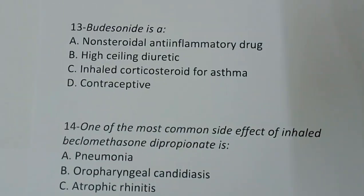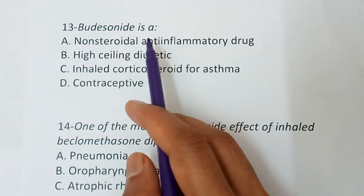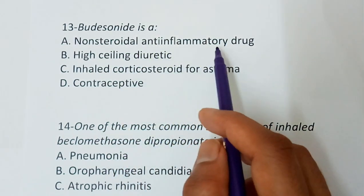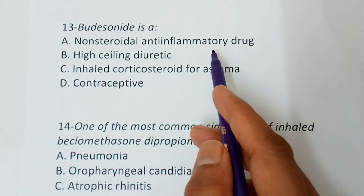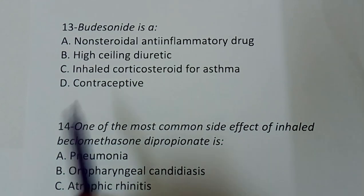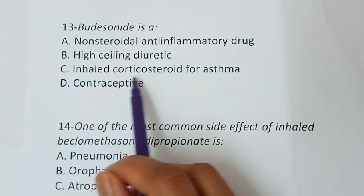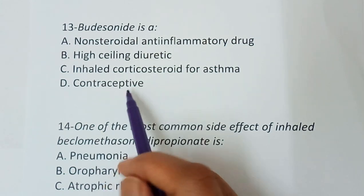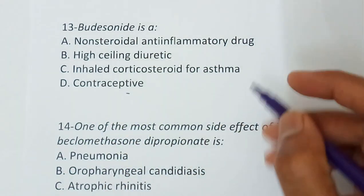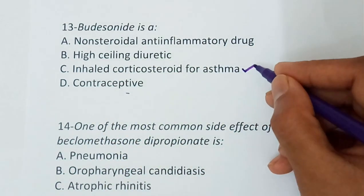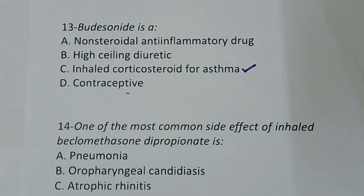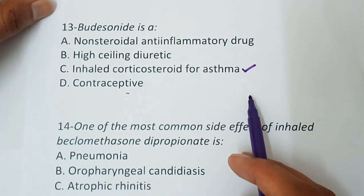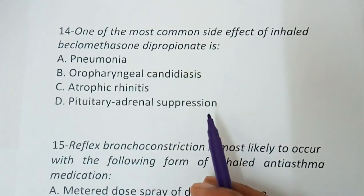Question number thirteen: Budesonide — is it a non-steroidal anti-inflammatory drug (NSAID), a high-ceiling diuretic, an inhaled corticosteroid for asthma, or a contraceptive? The correct answer is option C: inhaled corticosteroid for asthma.